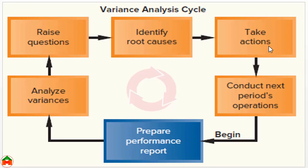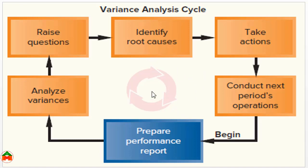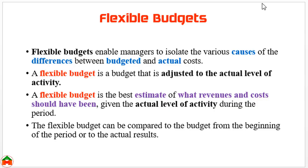In this way we can get ideas to conduct next period's operations. This process is continuous — it is a variance analysis cycle. Each year we start again by preparing the performance report, then analyzing the variances, raising questions, identifying root causes, taking actions, and then conducting next period's operations. In this chapter we are going to learn about flexible budgets, which enable managers to isolate the various causes of differences between budgeted and actual cost.